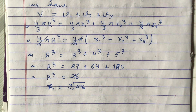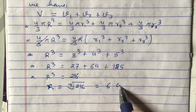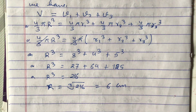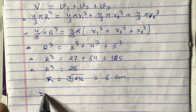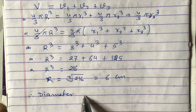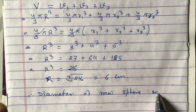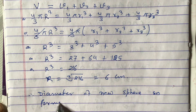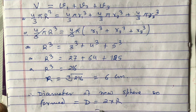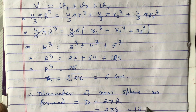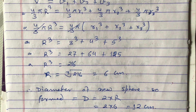We found R equals 6 centimeter, but we are asked to find the diameter of the new sphere. Therefore, diameter D equals 2 times R equals 2 times 6 equals 12 centimeter. So the diameter of the new sphere formed is 12 centimeter. Thank you for watching this video.